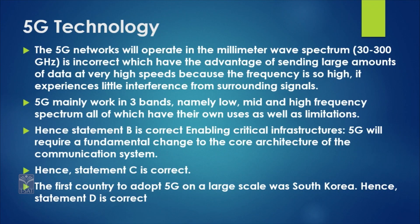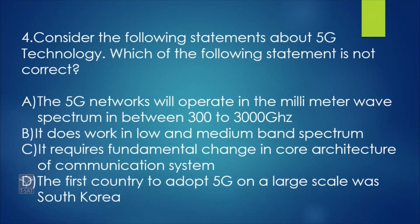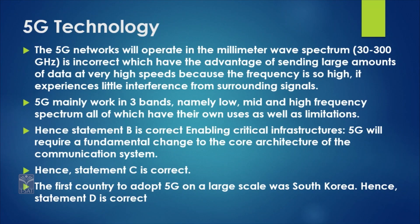5G mainly works on three bands: low band, mid band, and high frequency band spectrum. All of these have their own uses as well as limitations. So statement B — that it works in low and medium band spectrum — is correct. Enabling critical infrastructure, 5G will require a fundamental change to the core architecture of the communication system.